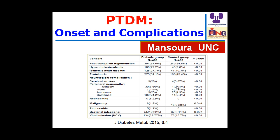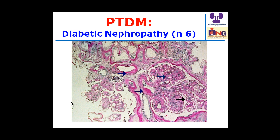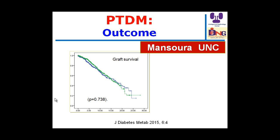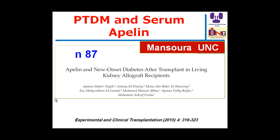Post-transplant diabetes is bad news because it is associated with multiple comorbidities including hypertension, ischemic heart disease, proteinuria, retinopathy, and other complications. Biopsy of transplanted kidneys can show diabetic nephropathy with mesangial expansion and vascular affection. In our study, there was no significant difference in graft survival, but there was a significant effect on patient survival. High serum adiponectin coupled with G-protein is also associated with post-transplant diabetes as a risk factor.